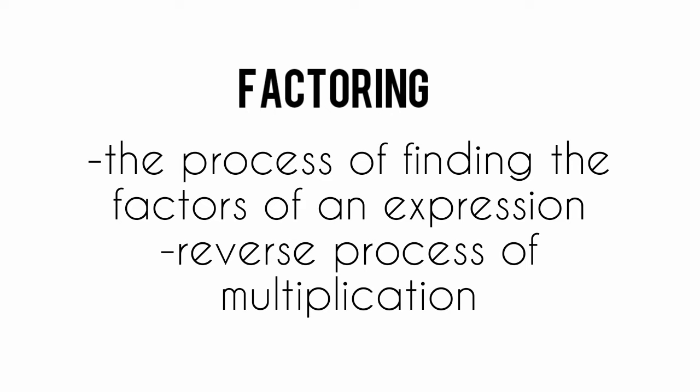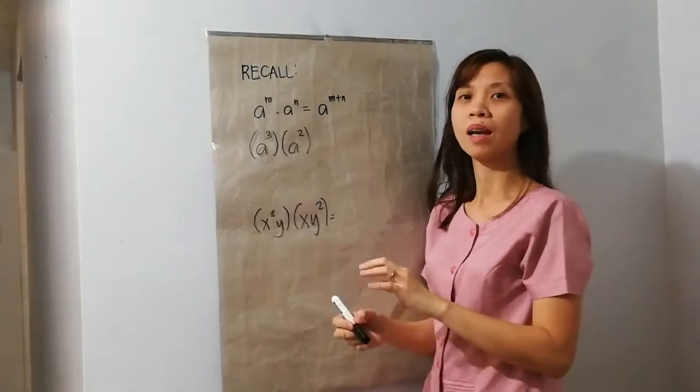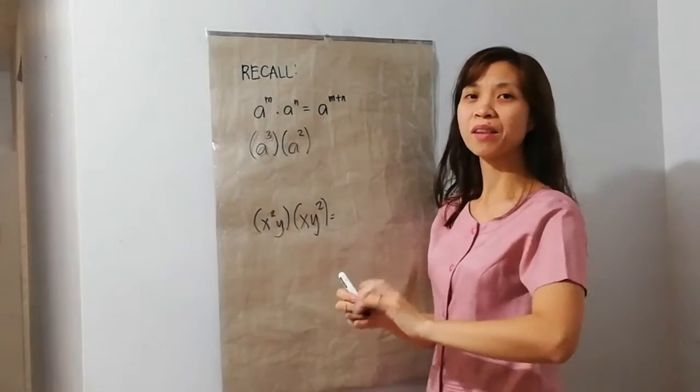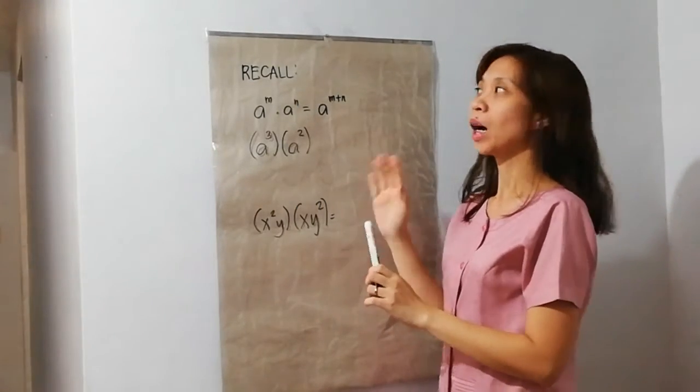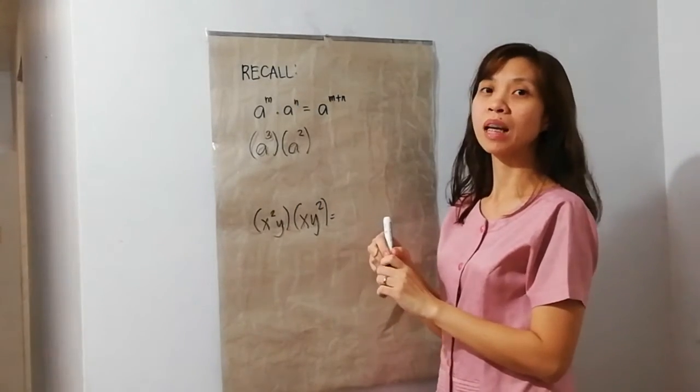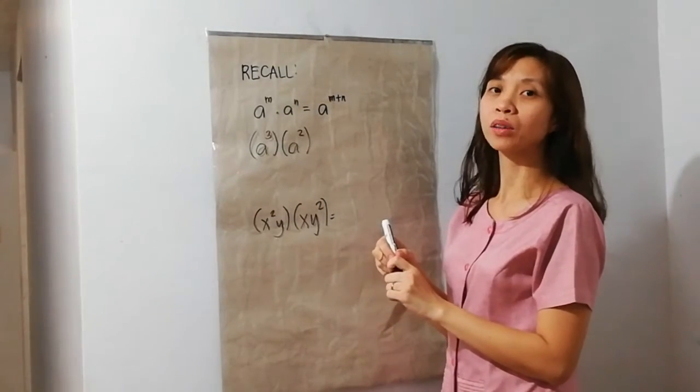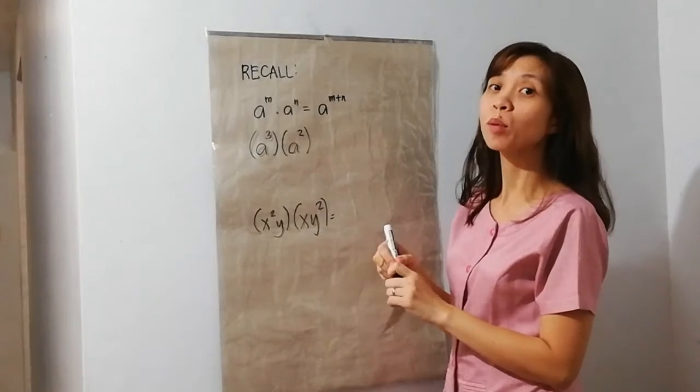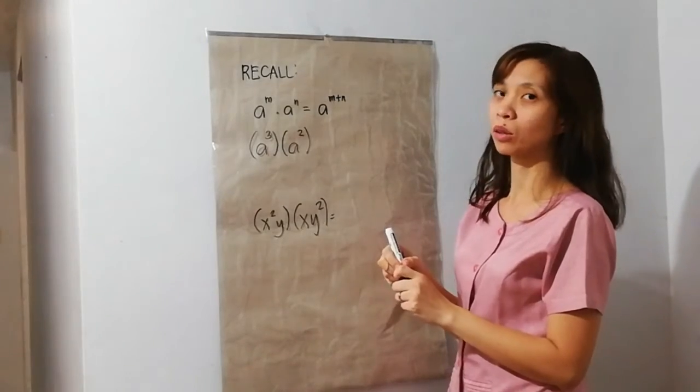Factoring. It is the process of finding the factors of an expression. It is also the reverse process of multiplication. Our topic for today is how to factor the greatest common monomial factor.